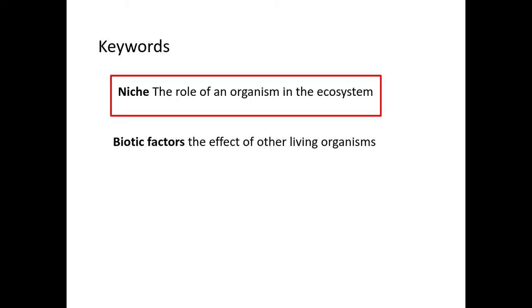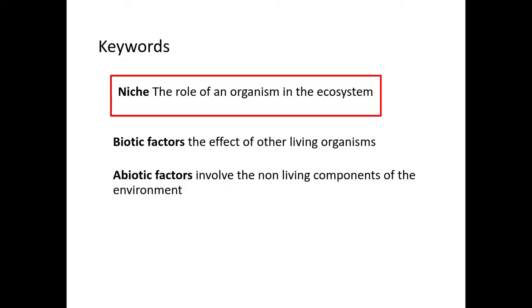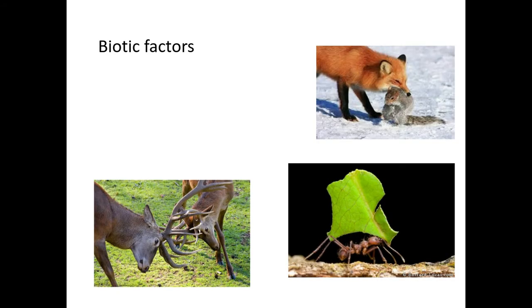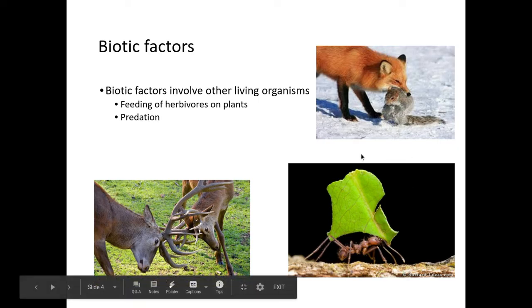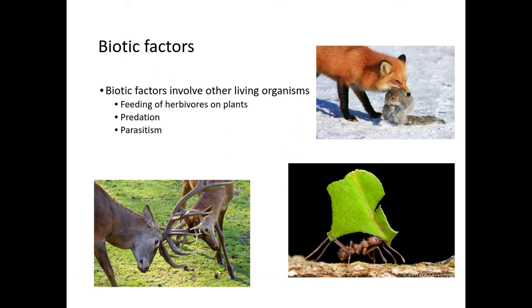We have biotic factors — these are the effects of living organisms. Abiotic, therefore, is the non-living components of an environment. Looking at some of these biotic factors, these are the effects of other living organisms. For example, we have feeding of herbivores on plants. Predation — for example, here we have a fox and a squirrel. Parasitism — so for example, having a parasite or not is an effect of a living organism.